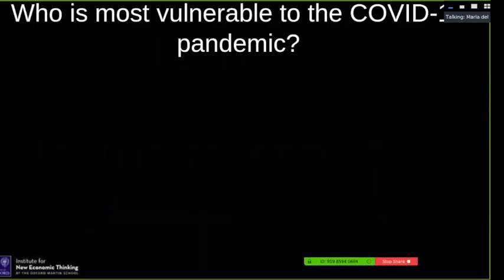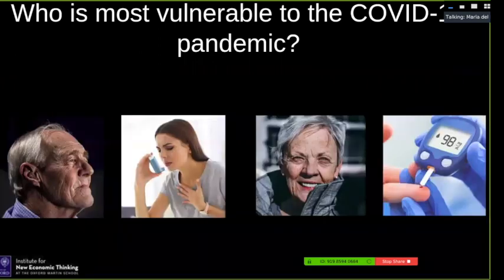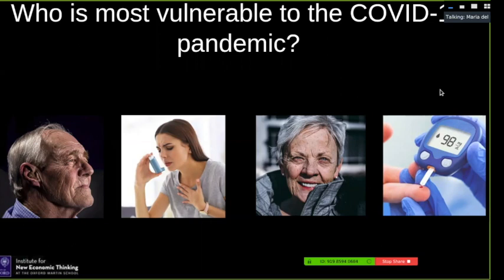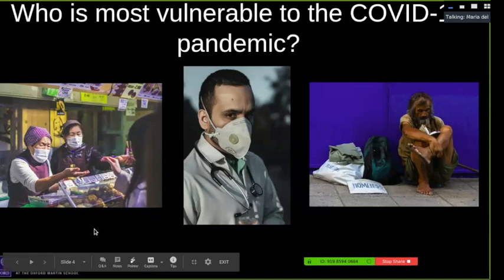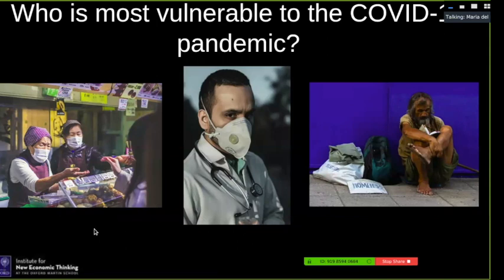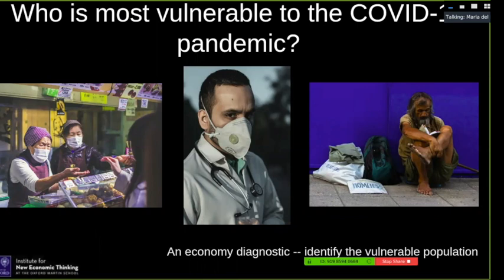I'm going to talk about the supply and demand shock — what I would say is the most pressing economic question of the COVID pandemic. Who is most vulnerable? In medical studies, it tends to be the elderly population and people with pre-existing conditions such as asthma or diabetes. But we also need to look at the economic costs, where people are suffering because they cannot get income since their work requires being physically present. So what we're going to do is an economic diagnostic — identify the vulnerable people and see how we can help them.